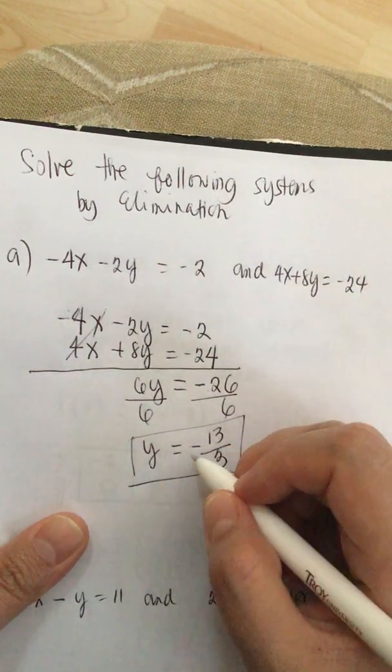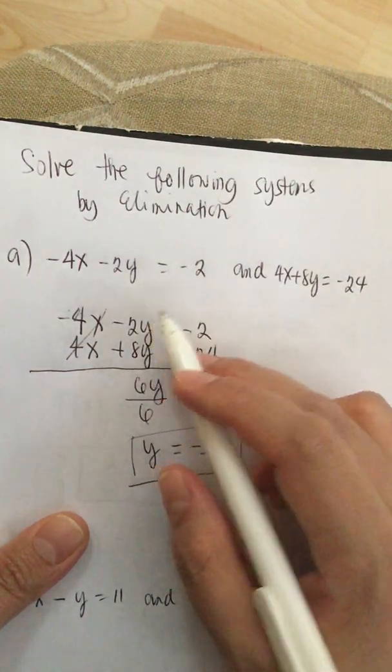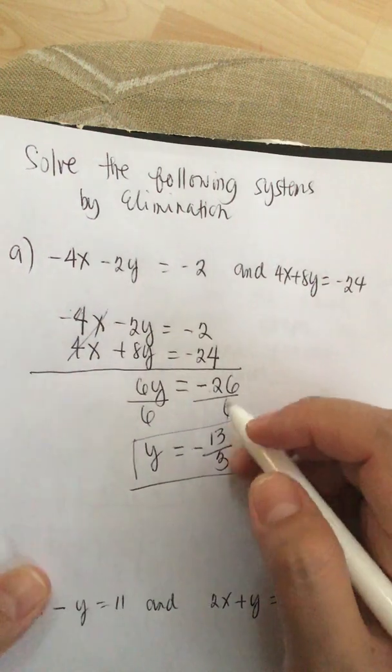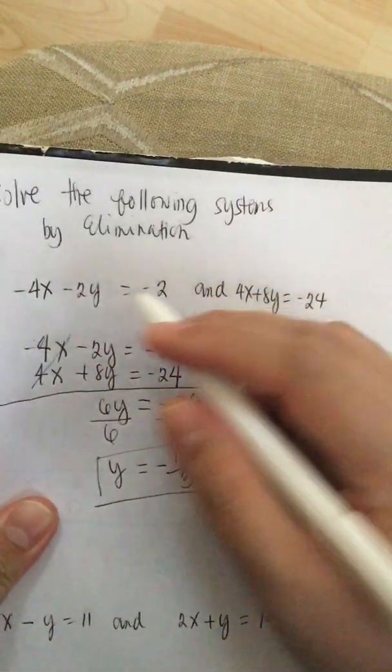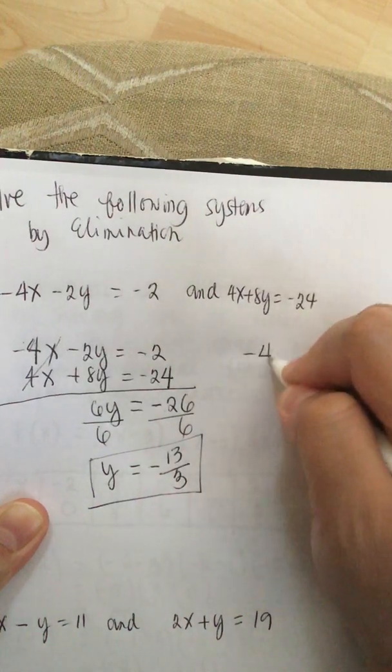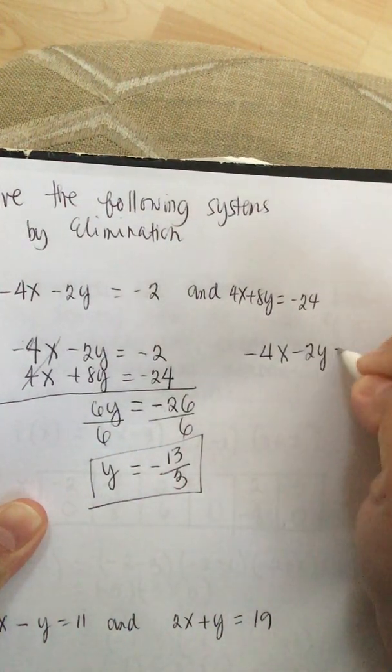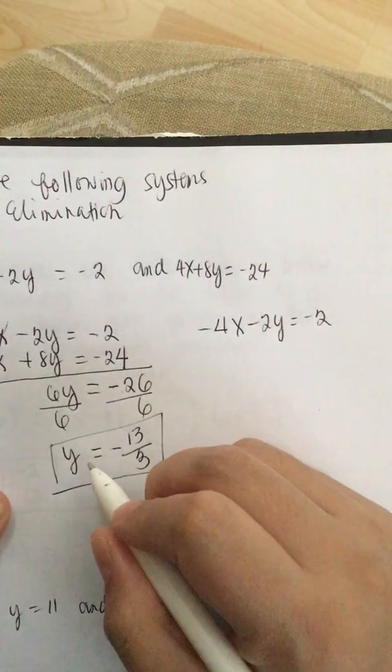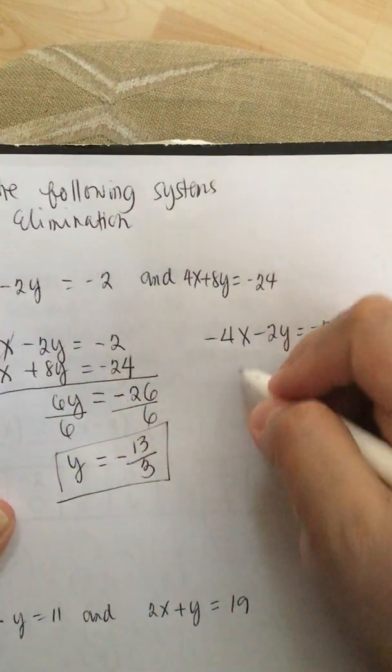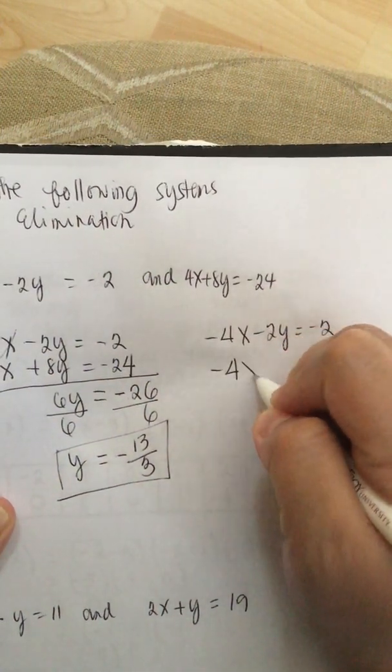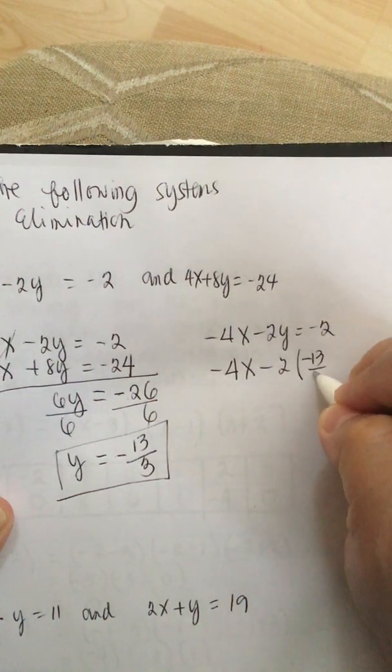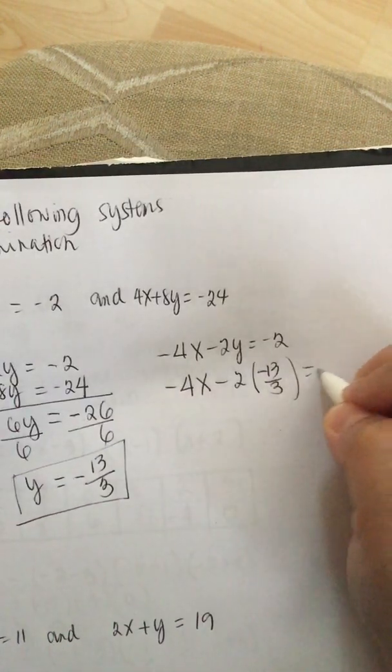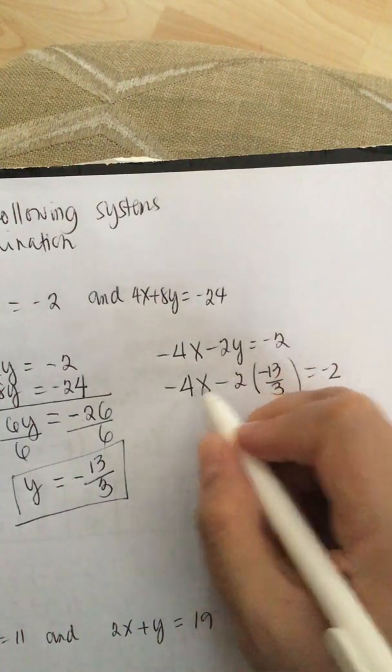So now we know what y is equal to. So we plug in that to find the partner x. Let's use this equation: -4x - 2y = -2. And y is equal to -13 over 3. So -4x - 2 times -13 over 3 is equal to -2. And then we solve for x.